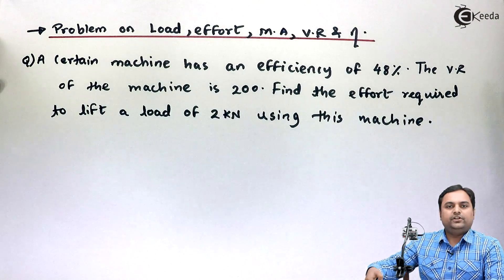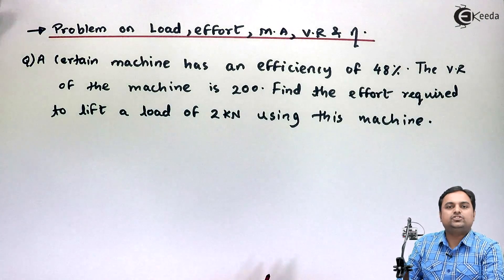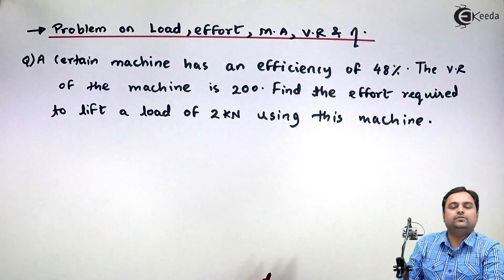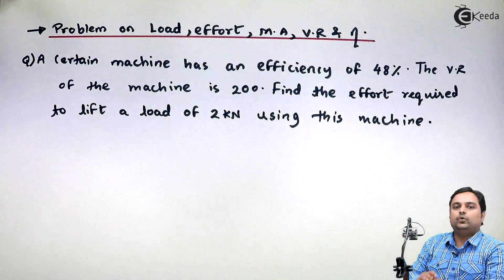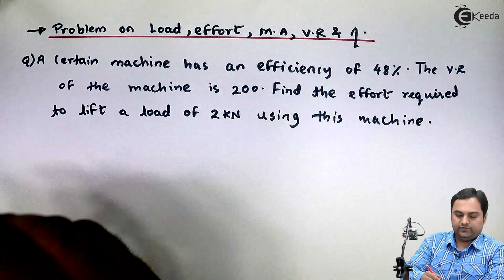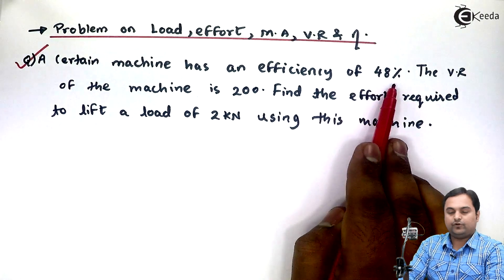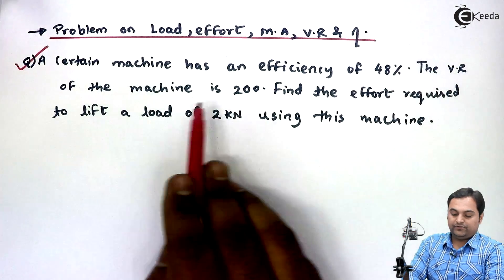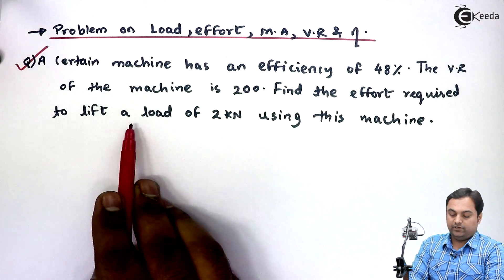Hello friends, in this video we would be solving a problem on simple machines involving load, effort, mechanical advantage, velocity ratio, and efficiency. Let us start with the question: A certain machine has an efficiency of 48%. The velocity ratio of the machine is 200. Find the effort required to lift a load of 2 kilonewtons using this machine.